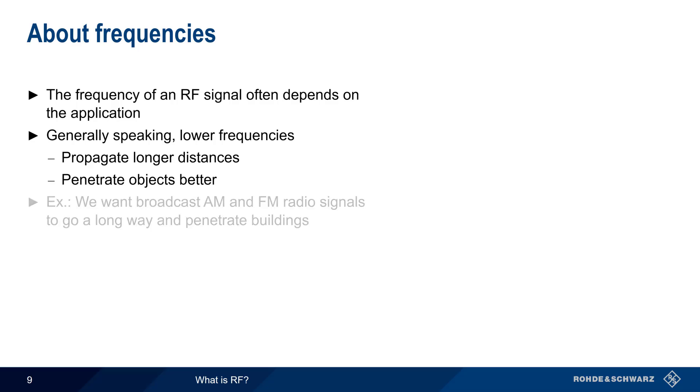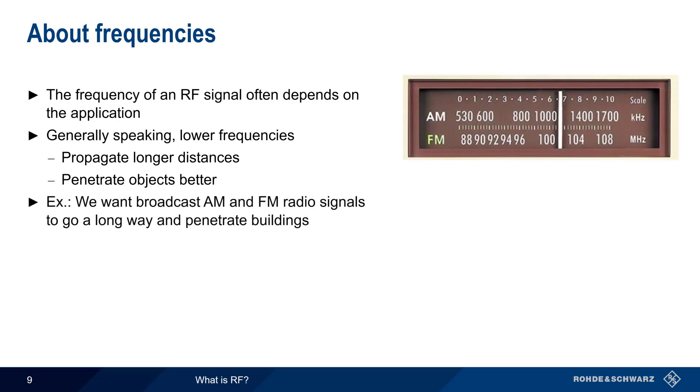For example, broadcast AM radio uses frequencies in the hundreds of kilohertz, and broadcast FM radio uses frequencies around 100 megahertz, because we want these relatively low frequency signals to travel many kilometers, and be receivable inside of buildings, houses, etc.